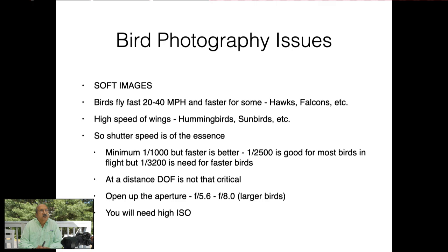Typically birds are not going to be that close unless you're doing portraiture, so depth of field doesn't play as much of a role at distance. An aperture between f/5.6 and f/8 for larger birds will be fine. You want open apertures to achieve higher shutter speeds at the lowest ISO. If needed, raise your ISO — you may sacrifice some noise, but I'd much rather get a good image with a little noise that I can address in post-processing.